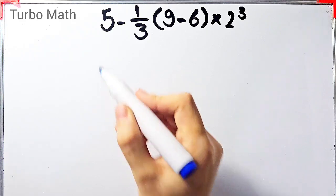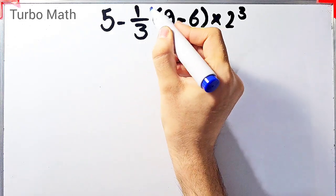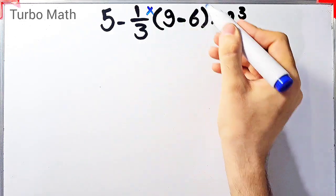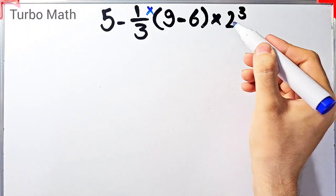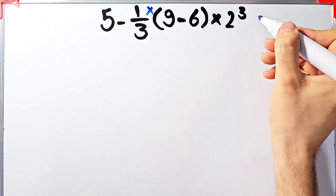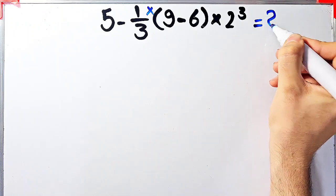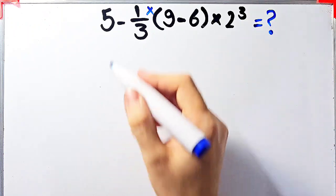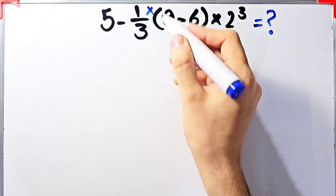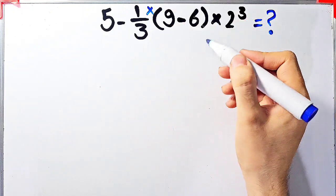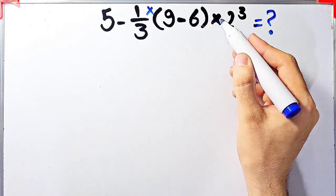In the first question, we have 5 minus 1 over 3, then times open parentheses 9 minus 6 close parentheses, then times 2 to the power of 3. What is the answer of this question? In this question, we have subtraction, multiplication, parentheses, and exponent.